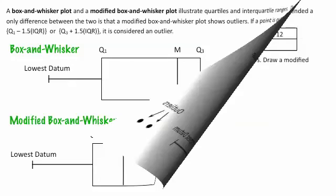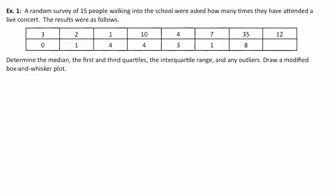In example one, a random survey of 15 people walking into the school were asked how many times they've attended a live concert. We need to determine the median, the first and third quartiles, the interquartile range, and any outliers, then draw a modified box and whisker plot. When finding the median, we first organize the data into an ordered list from lowest to highest.